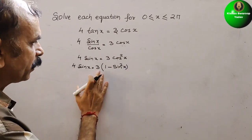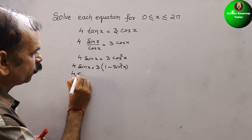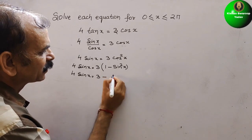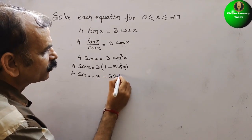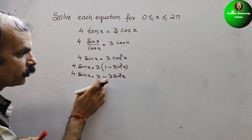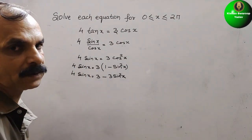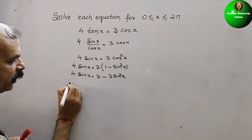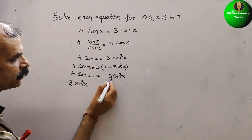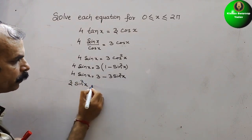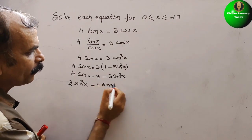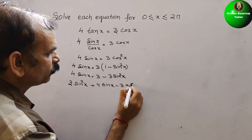Now just multiply this out. So here you will get 4sin(x) = 3 − 3sin²(x). Bring everything to the left side and arrange them by degree. So we will get 3sin²(x) + 4sin(x) − 3 = 0.